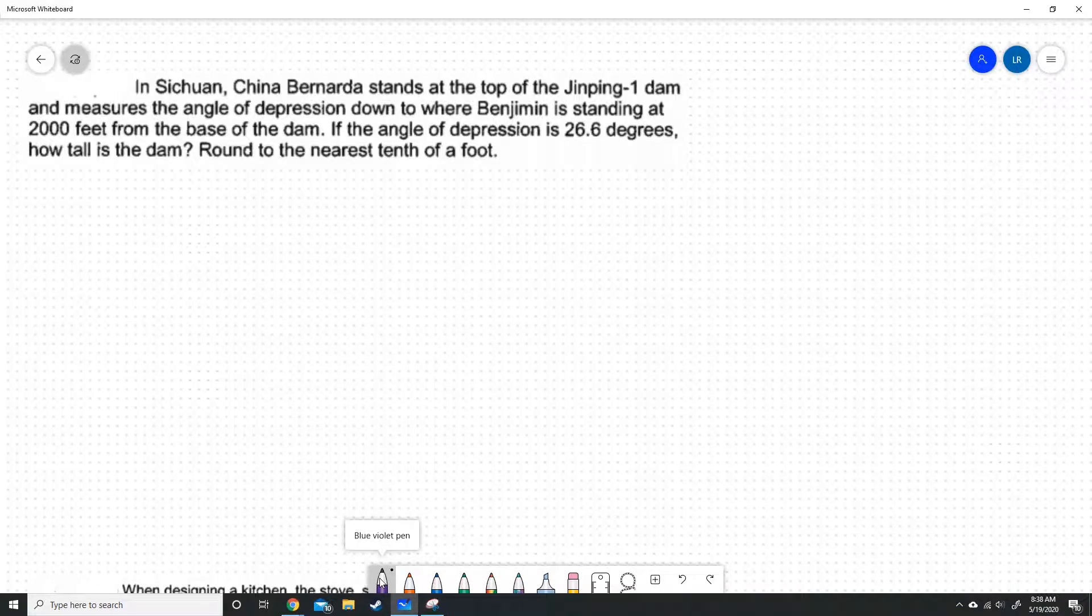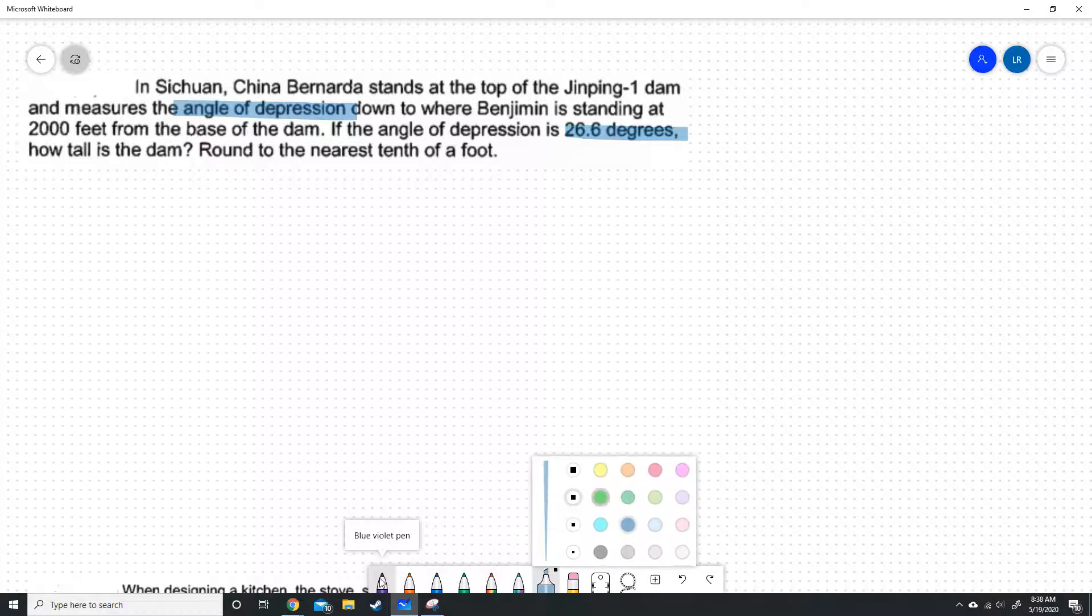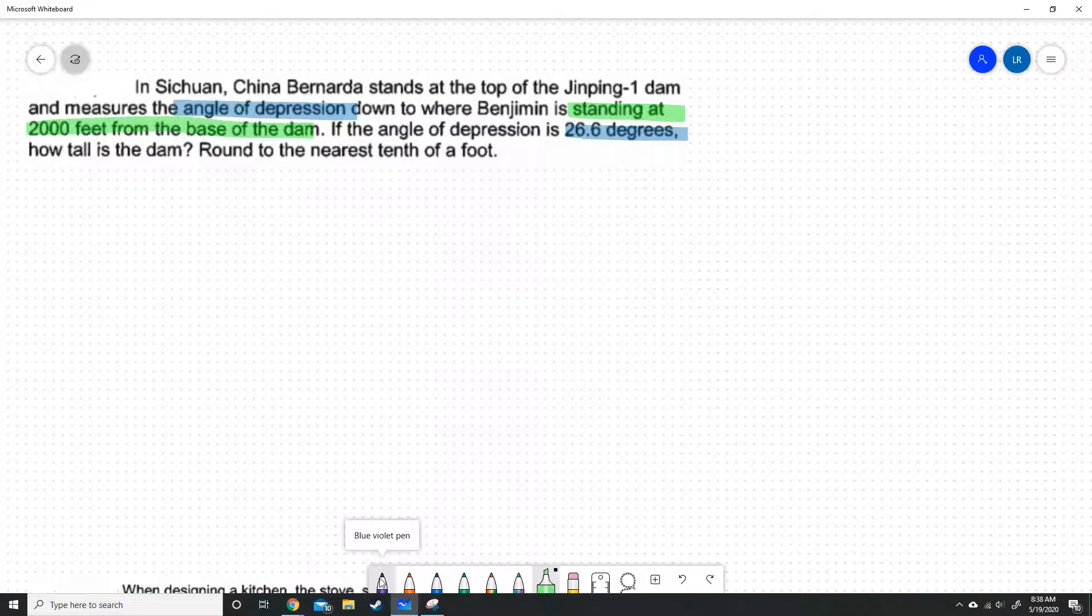There's a couple of things I want to highlight. I want to highlight that Bernarda measured the angle of depression. That is important to know. And the angle of depression is 26.6 degrees. The other thing I want to highlight is that Benjamin is standing at 2,000 feet from the base of the dam.